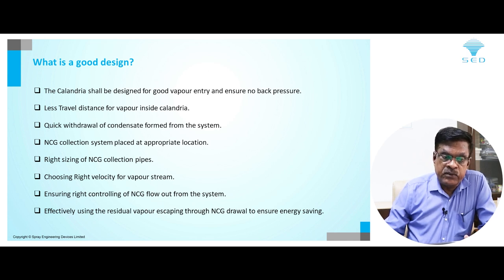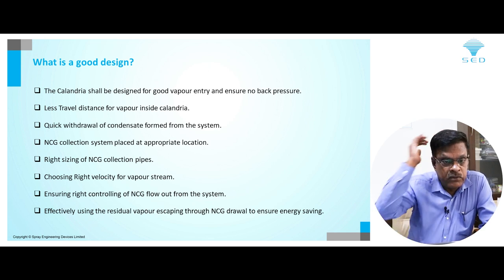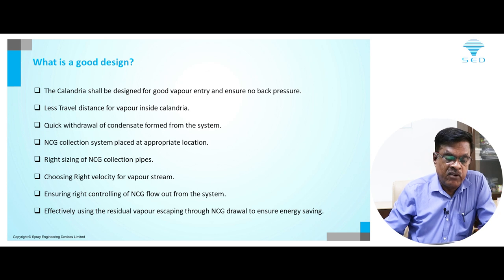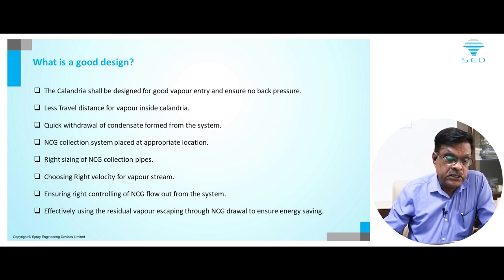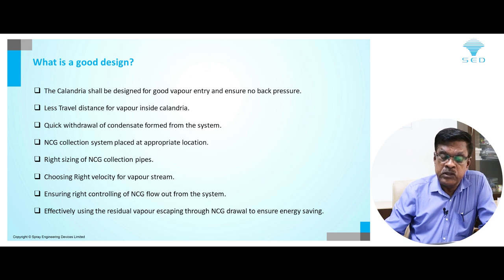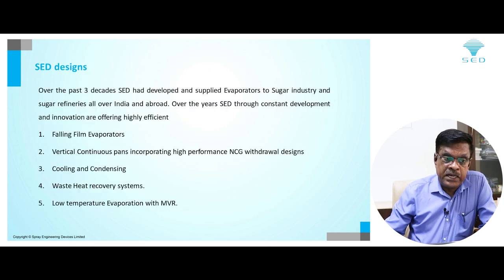What constitutes a good design? The calendria should be designed for good vapor entry with no back pressure on the feeding water vapor. The vapor should travel a short distance so that it occupies the full calendria, and condensate must be withdrawn quickly. NCG collection systems must be placed at appropriate locations, with right-sizing of NCG collection pipes, right velocity for the vapor stream, correct control of NCG flow out from the system, and effective use of residual vapor escaping through the NCG line for energy saving.